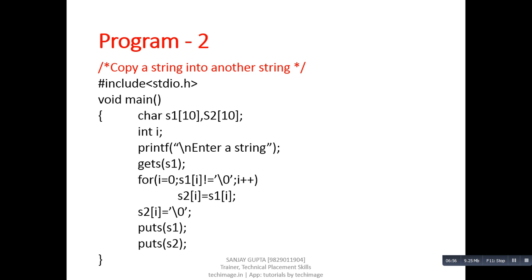Another program copies a string into another. For this we use two strings s1 and s2. First we read s1 from the user, then using a for loop we assign values of s1 into s2 character by character. After completion of the loop, we explicitly assign the null character into s2, because the loop does not assign null — when it reaches the null character, the loop automatically terminates. After assigning null, using puts we display the value of s1 as well as s2.